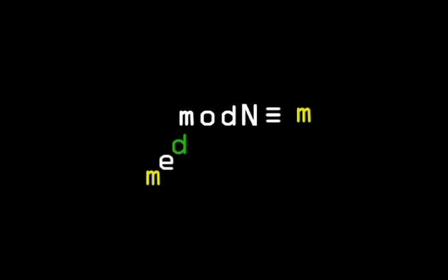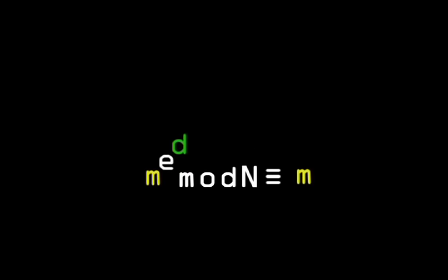So both operations together is the same as M to the power of E, all raised to the power of D, which is the same as M to the power of E times D. E is the encryption, D is the decryption.